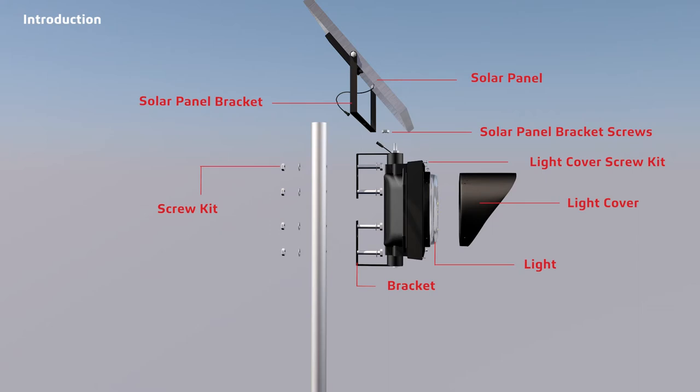These are all the components we supply with the beacon fixture. The solar panel, solar panel bracket, the light, light cover, light cover screw kit, mounting bracket, and screw kit for the light.